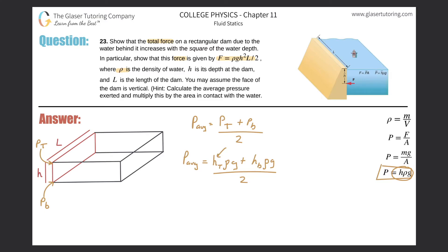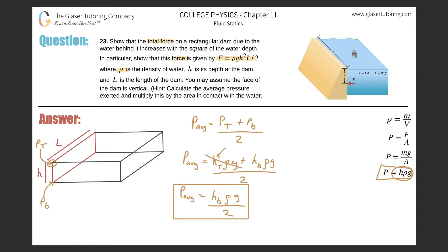Since the top term is zero, that whole term cancels. The average pressure on this rectangular wall equals the height at the bottom multiplied by the density of the fluid multiplied by gravity, all divided by two. This gives us the average pressure the rectangular wall experiences given the initial height and the final height.